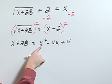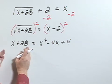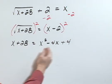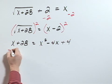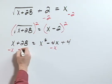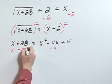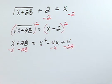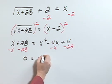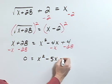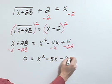Now let's move all of this stuff to the right side so we can solve this quadratic. To do so, let's subtract x from both sides as well as subtracting 28 from both sides. That means that 0 would equal x squared minus 5x minus 24.